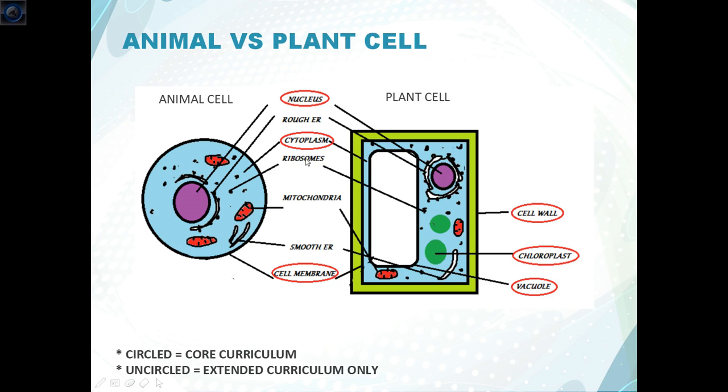The next up is endoplasmic reticulum represented as ER in the diagram. Now as you can see we've got two different types of endoplasmic reticulum. So you've got the rough endoplasmic reticulum and you have the smooth endoplasmic reticulum. Now what the rough endoplasmic reticulum is, is just both of these are just flattened discs.